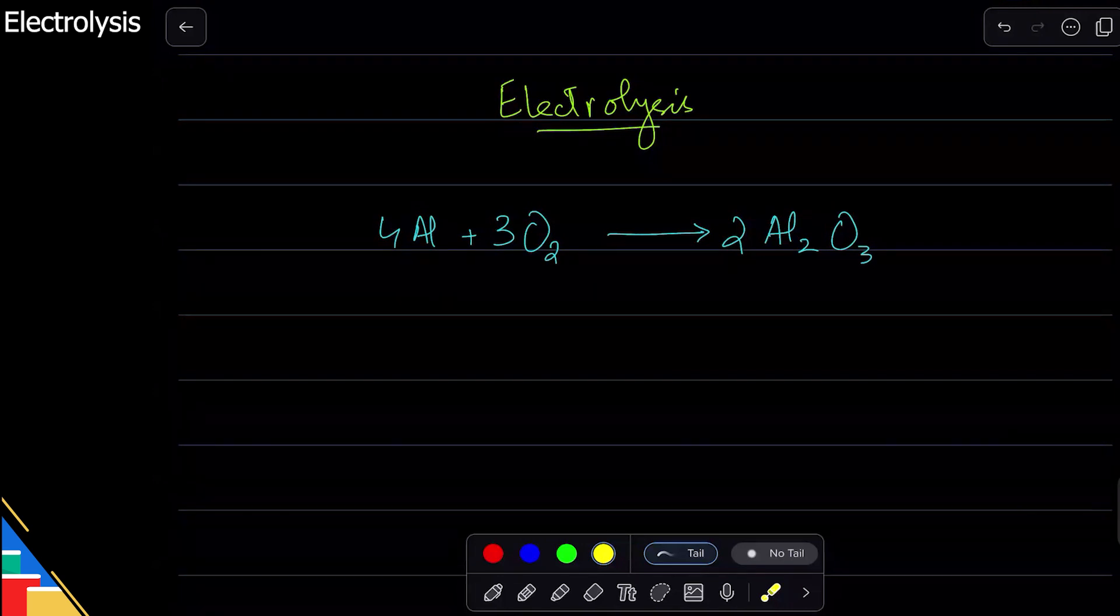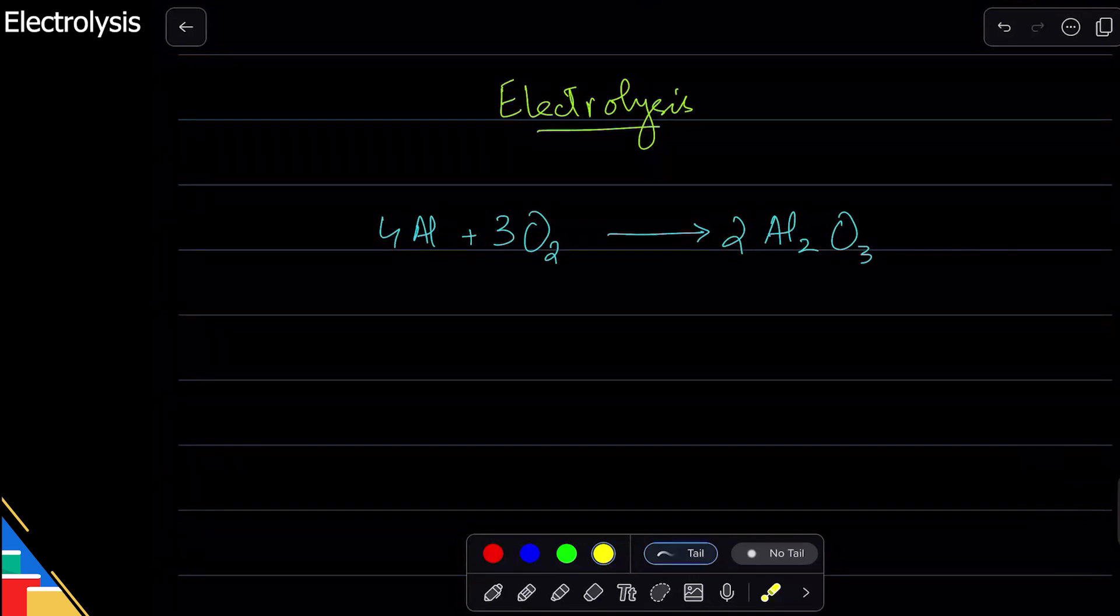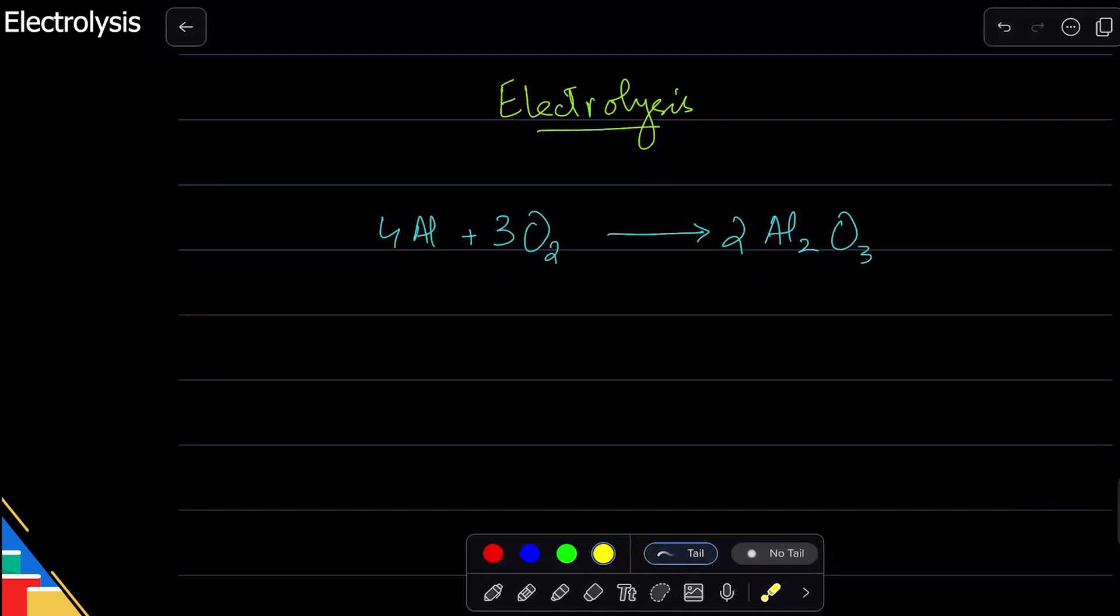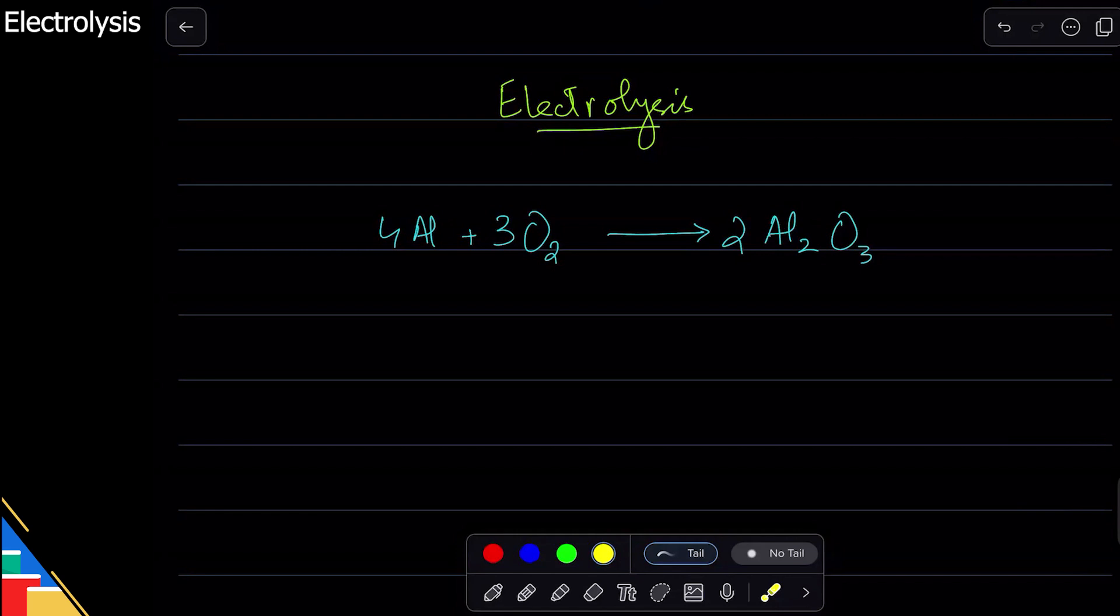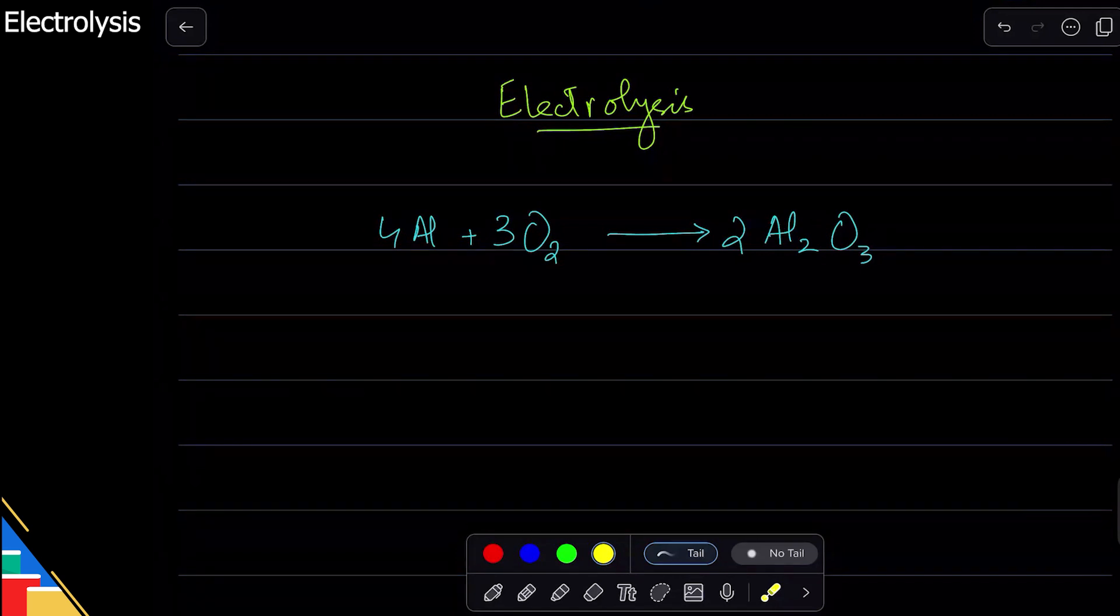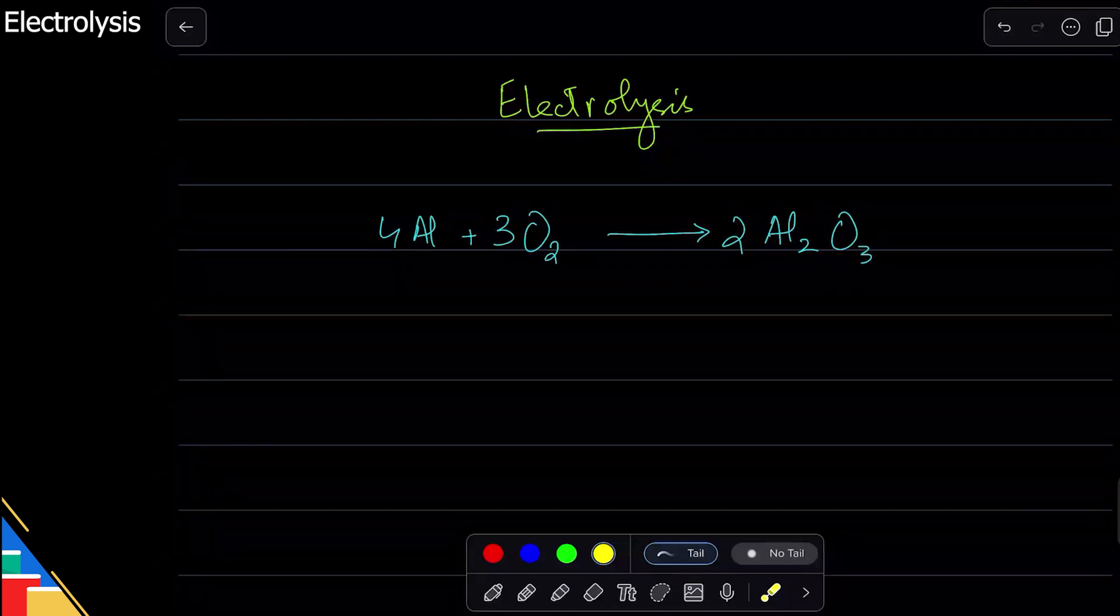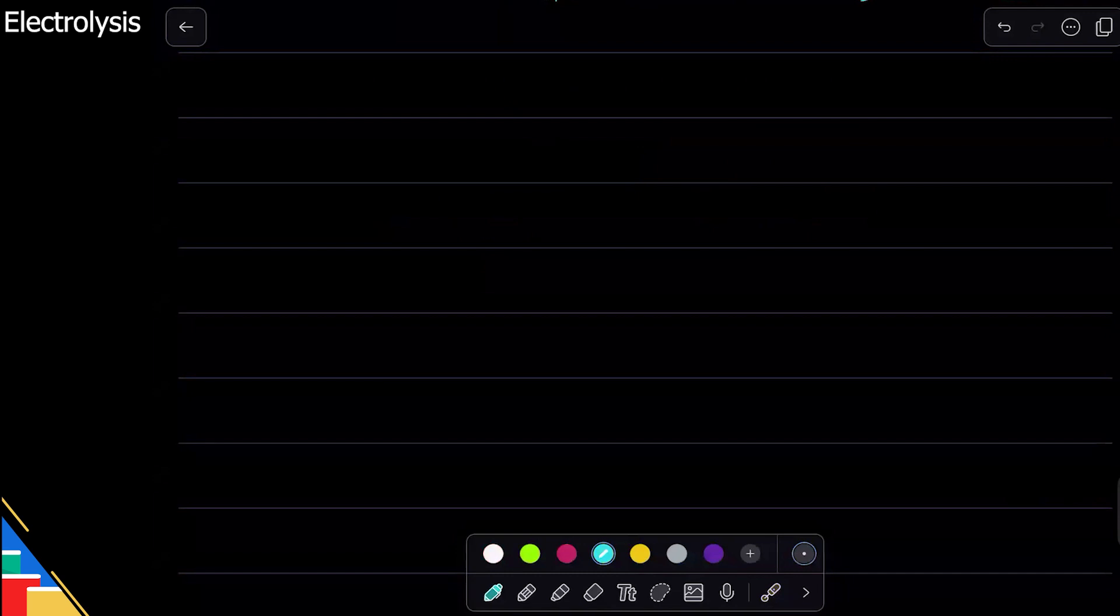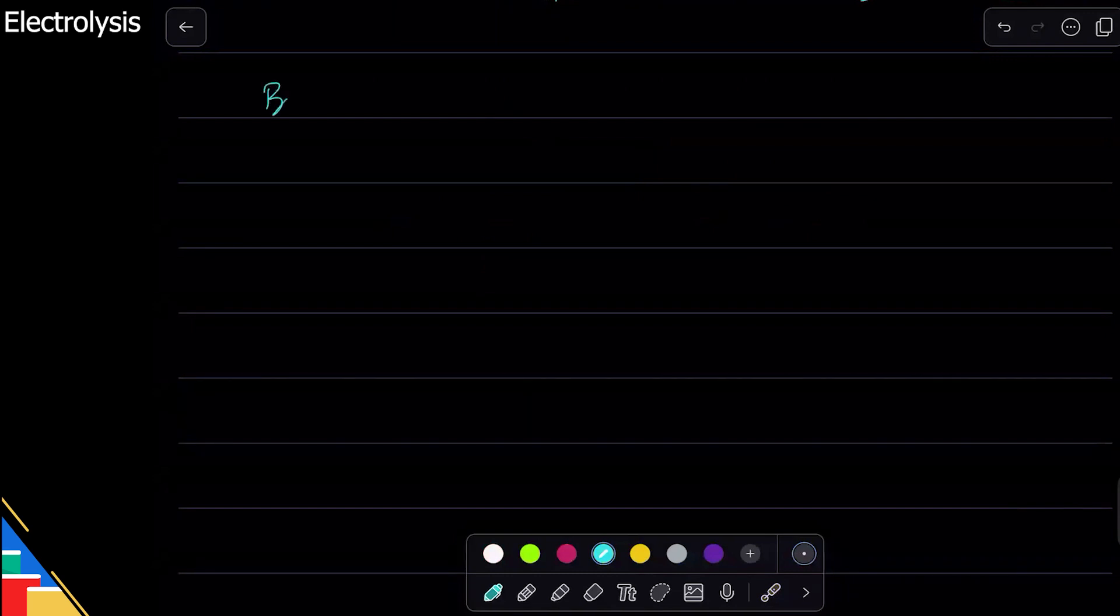Everywhere you see redox reactions, there are some electrons transferred. But to reverse it using electrolysis, using electricity, that is electrolysis. Okay? So there are many real world applications of this. For example, batteries—they're all electrolytic cells. And they produce electricity through these processes.